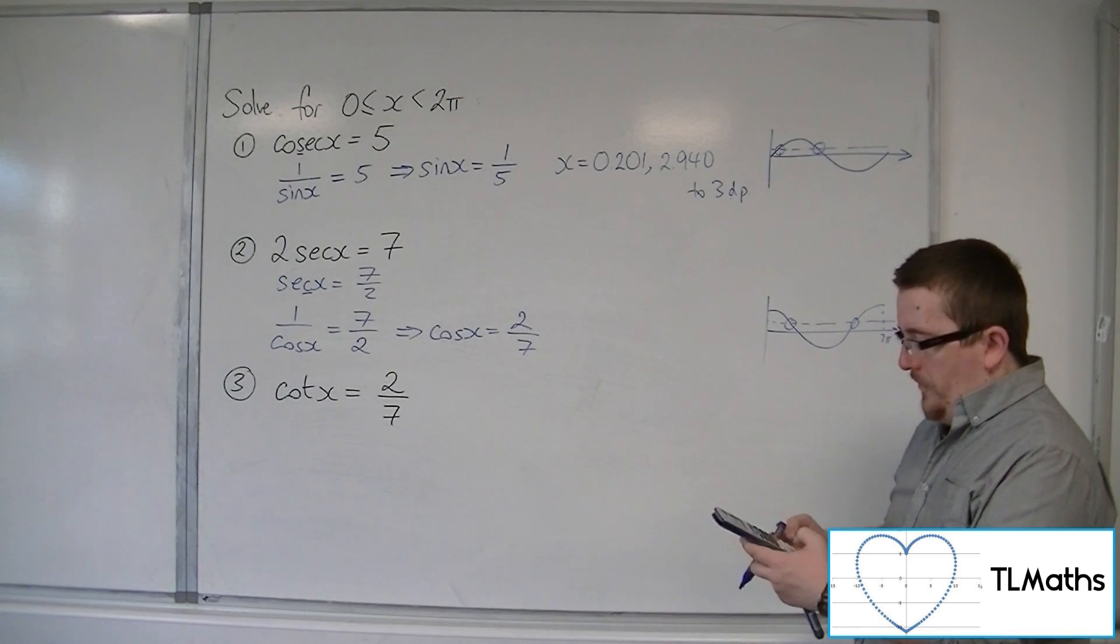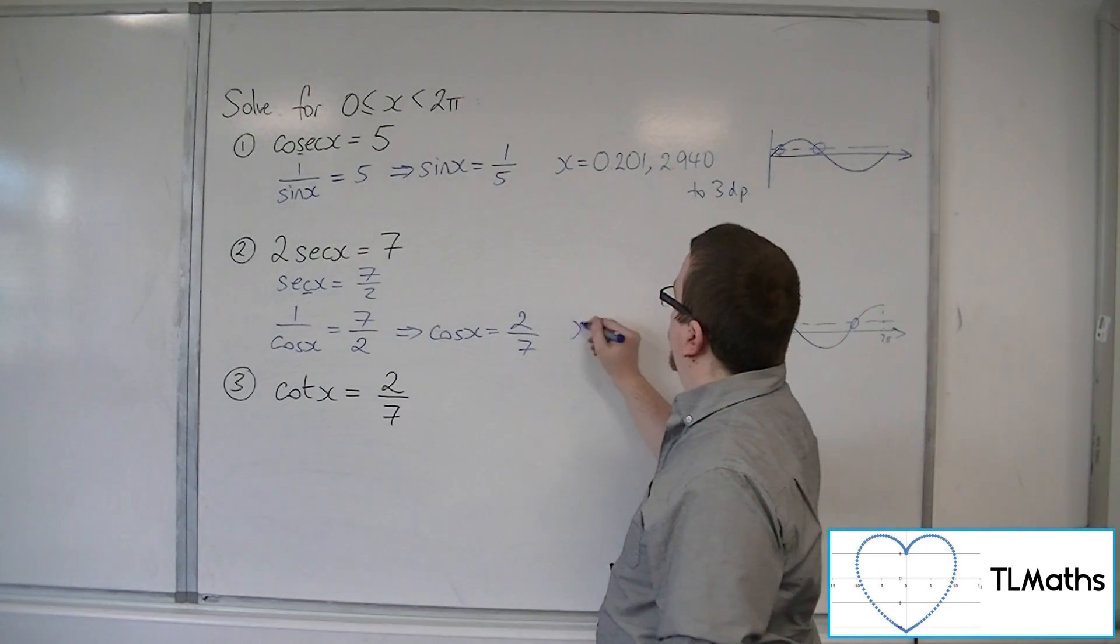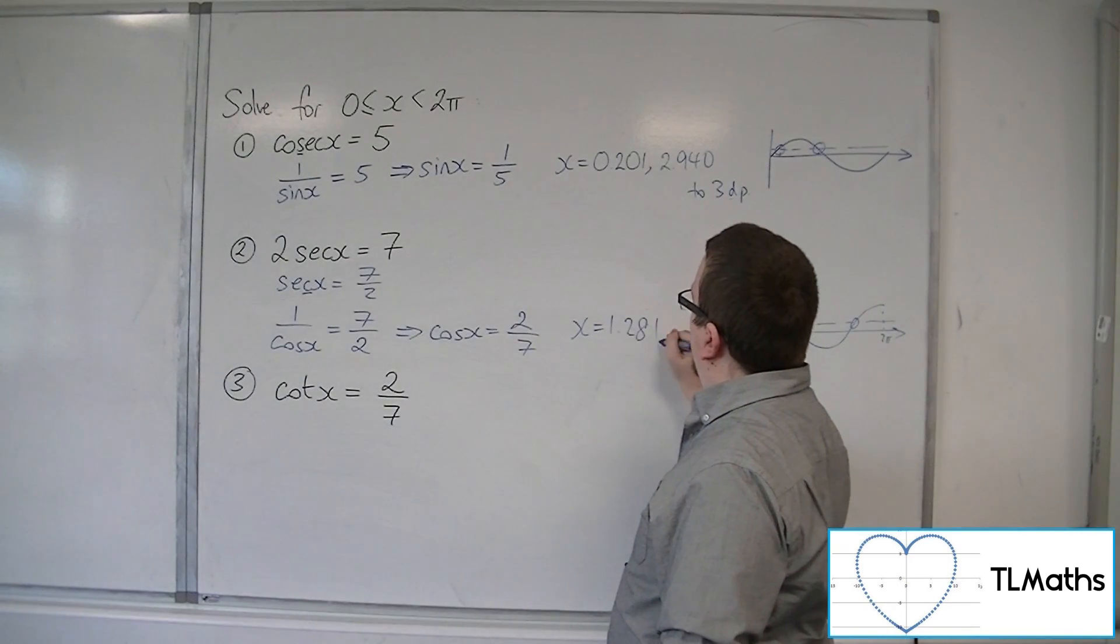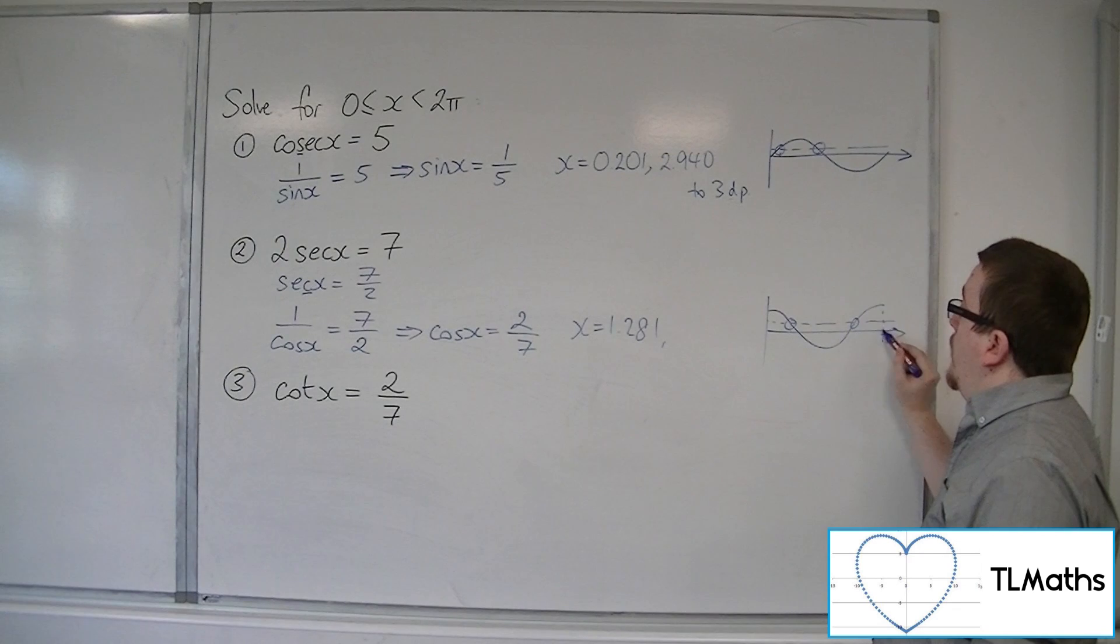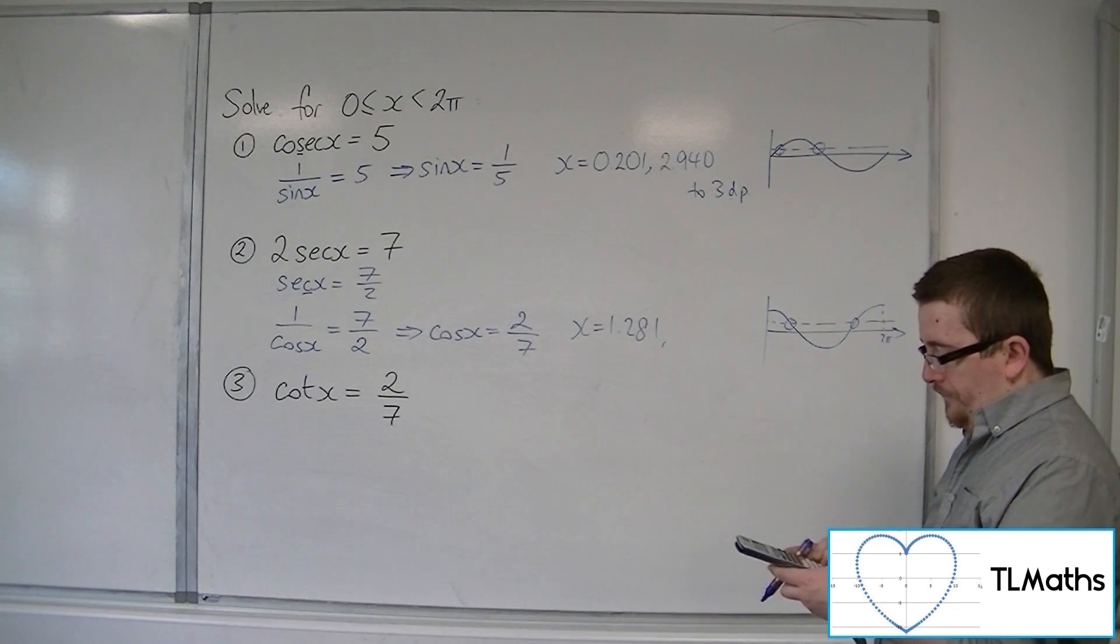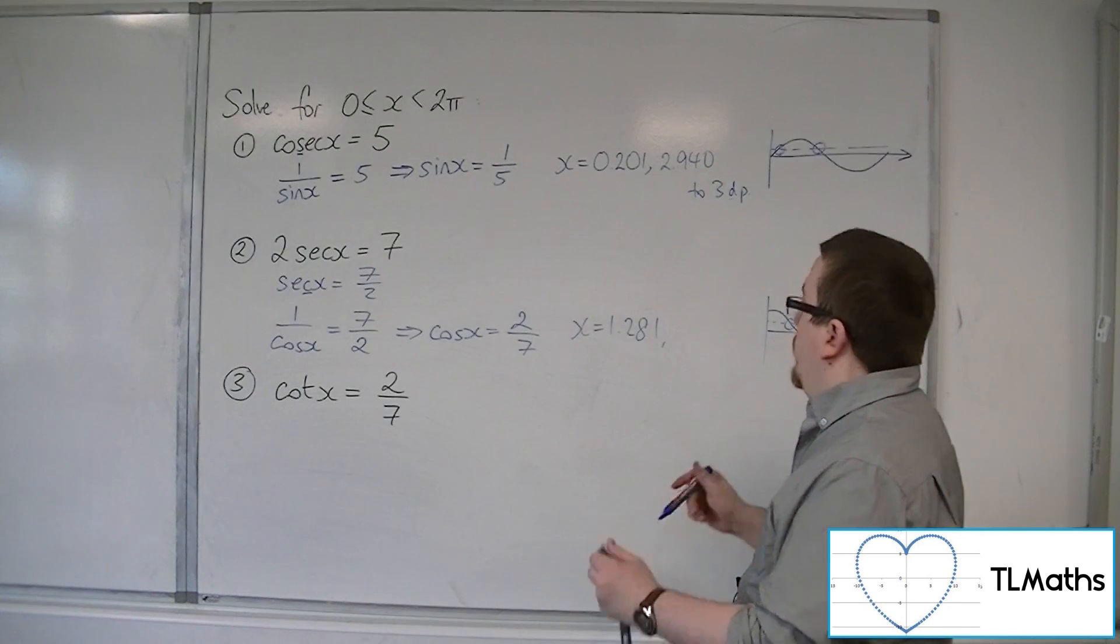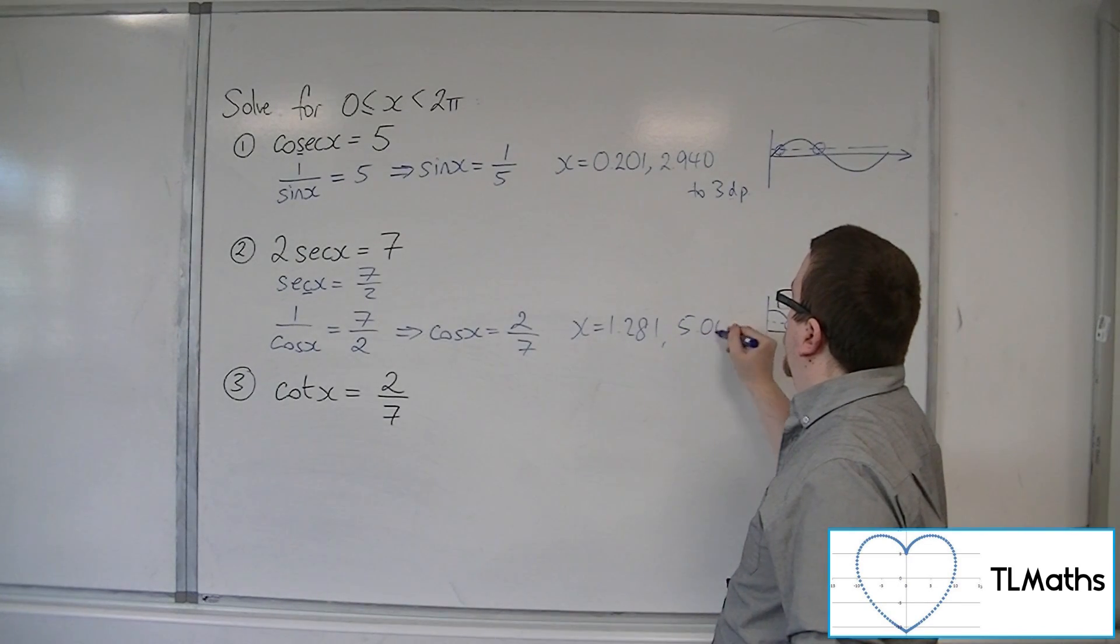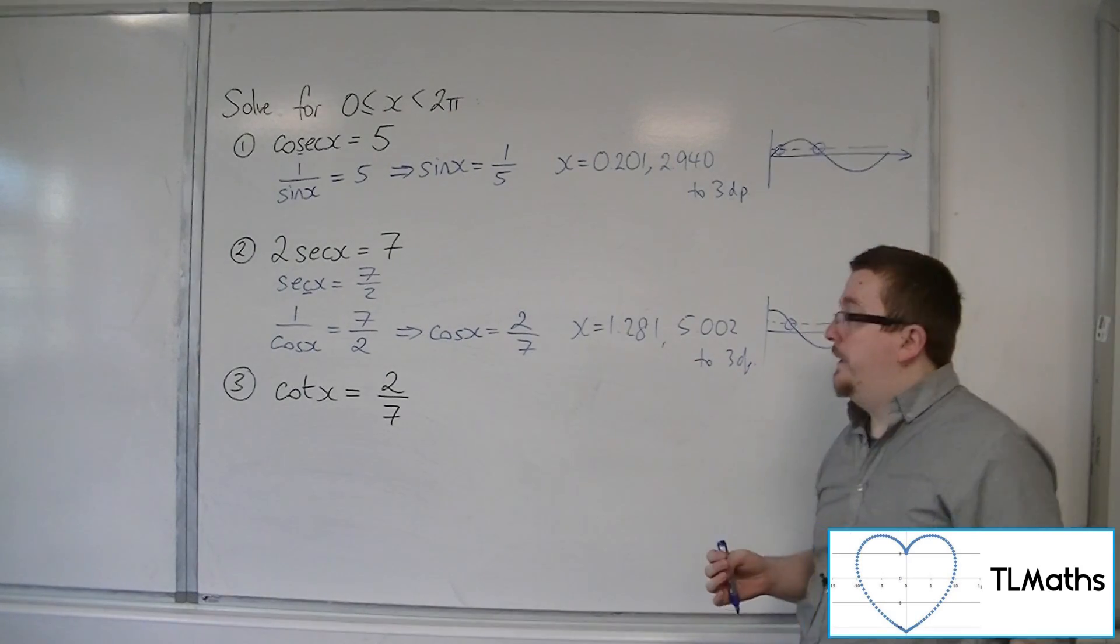So inverse cosine of 2 over 7 halves is 1.281 to 3 decimal places. That's that solution there. So we can do 2π take away 1.281. So 2π take away the answer gets us 5.002. And that gets us the two solutions that we need.